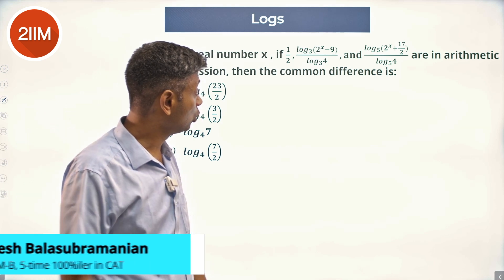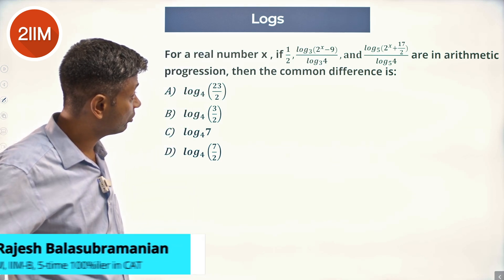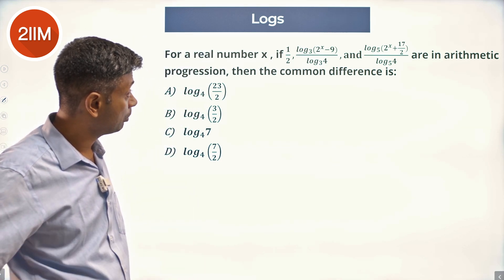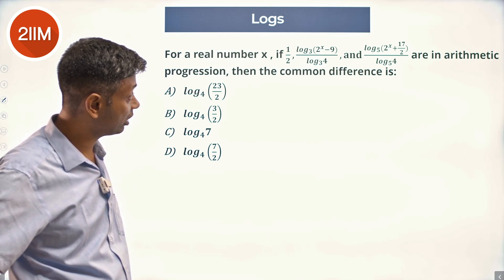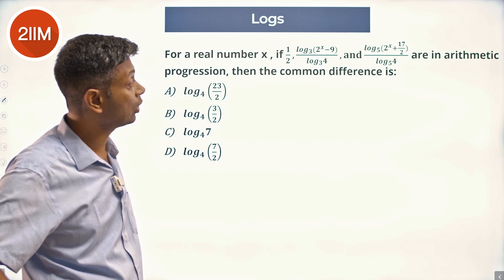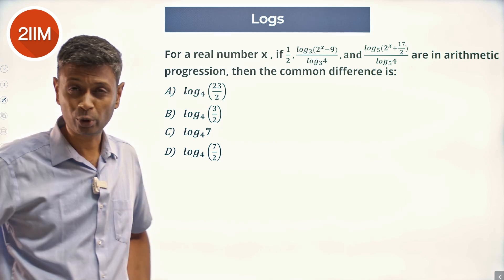For real number x, if (1/2)(log₃(2^x - 9))/(log₃4) and (log₅(2^x + 17/2))/(log₅4) are in arithmetic progression...